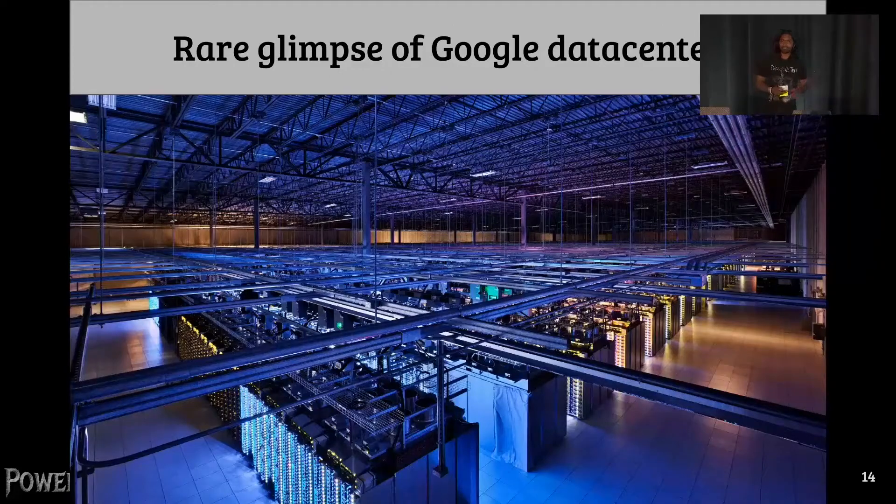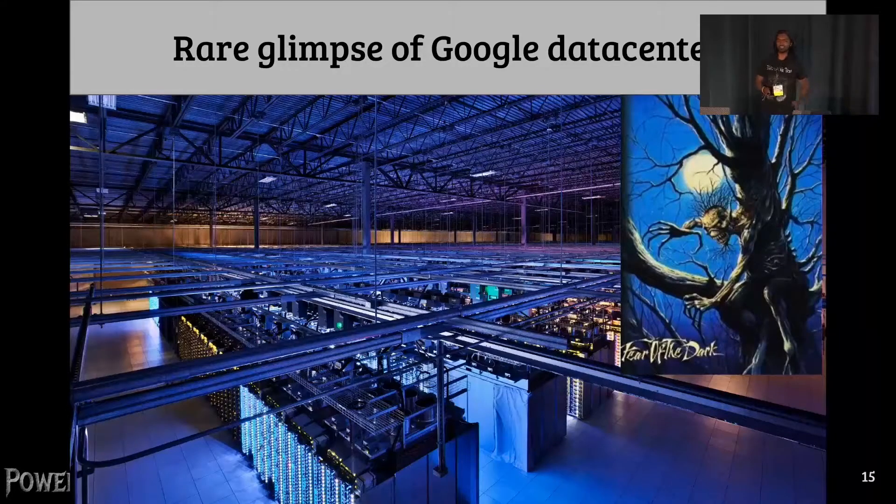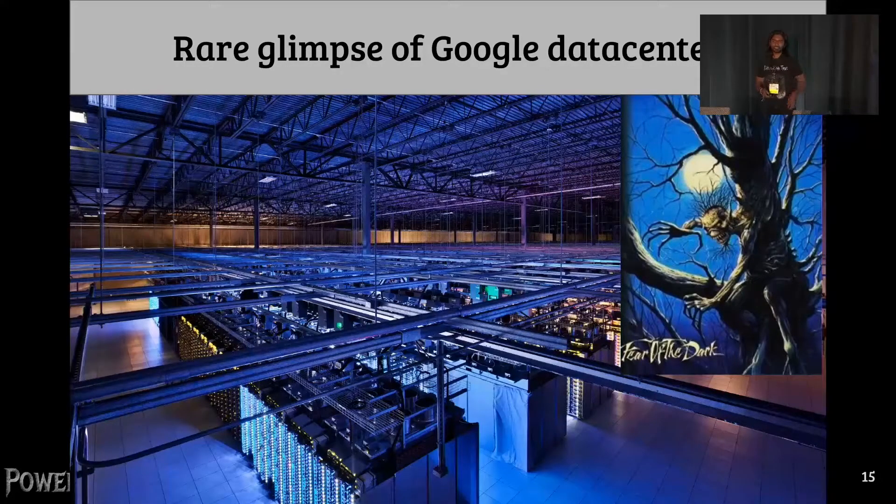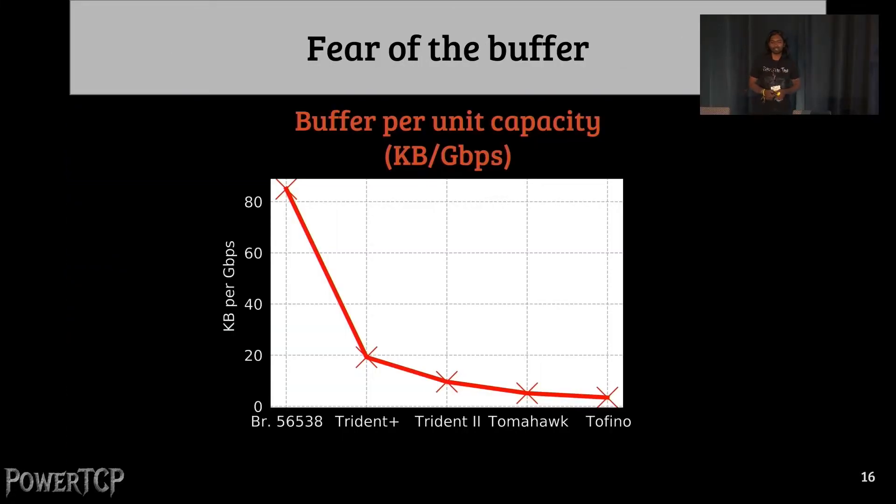Unlike the internet, one of the key properties of data centers is that they are all very dark. One could only assume that it's the fear of the dark in the data center, but it's actually the fear of the buffer. What we show here is on the x-axis is a generation of data center switches. And on the y-axis is the buffer per unit capacity. In short, the message here is that the buffer sizes of data center switches is gradually reducing over time. And accurate transport protocols that can efficiently use the limited amount of buffer is becoming more and more important recently.